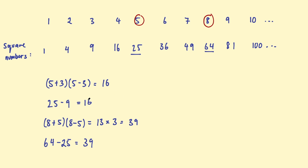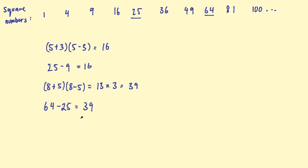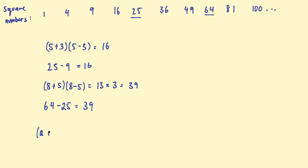So this is known as the difference of two squares. The difference of two square numbers is equal to the sum of those numbers multiplied by the difference. In general, we can say that (A + B) multiplied by (A − B) — whatever these numbers are, it will always work — is equal to A squared take B squared: the first number squared subtract the second number squared.